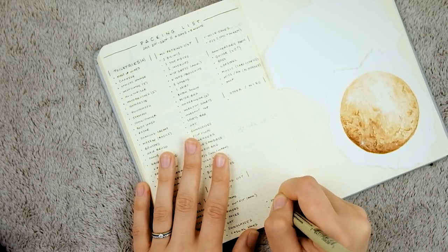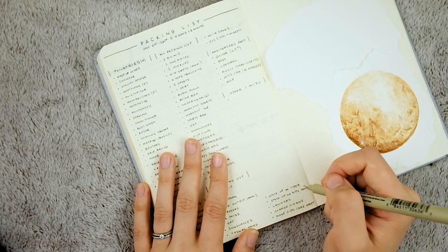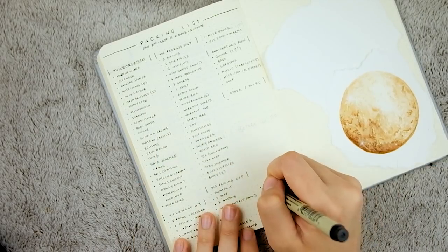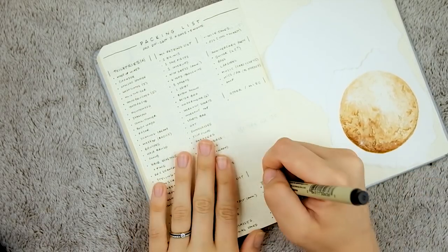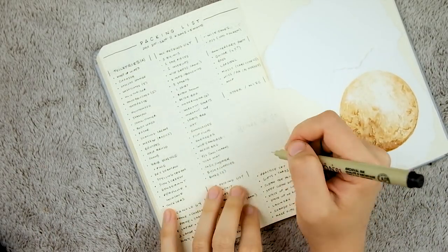Then I wrote my husband's packing list, and his was pretty straightforward. Just making sure that he had enough tops and bottoms and something nice to wear for the anniversary as a reminder for him for what he needed to bring.